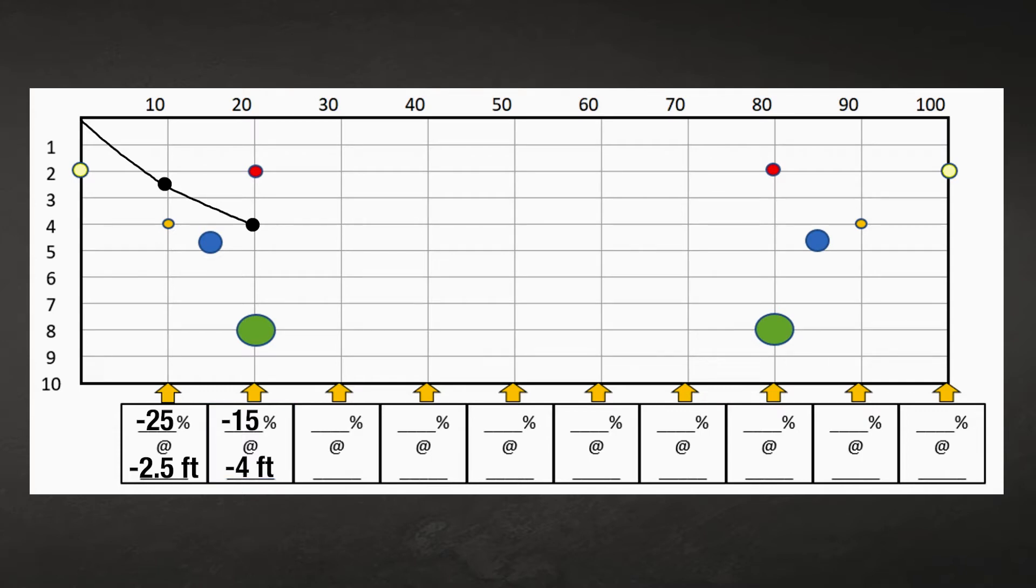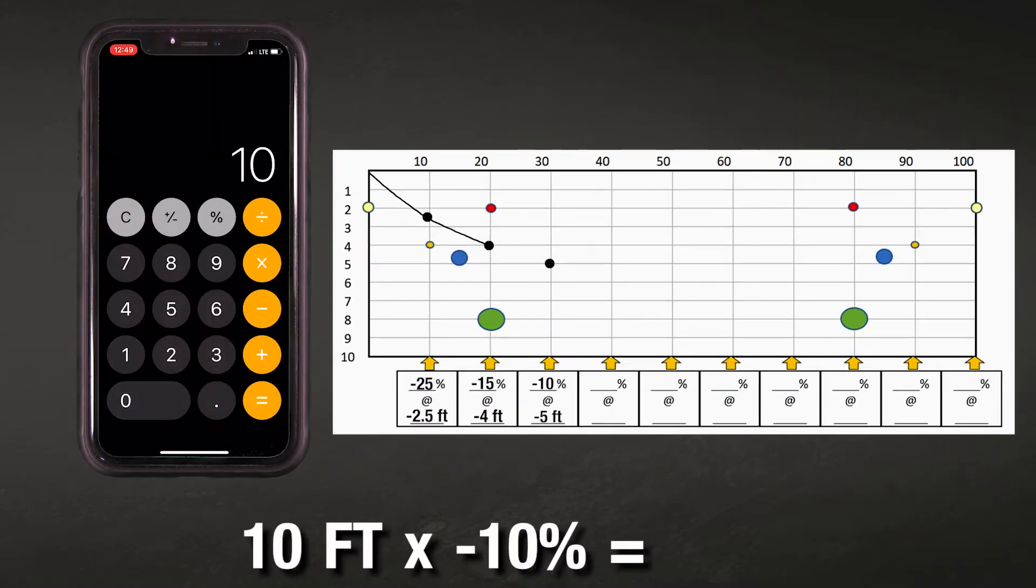Knowing that I want to be level at five feet deep leaves two more rods to achieve that depth. On rod three, I'm going to change the pitch to a negative 10%, which will result in a one foot depth change, bringing the depth to five feet. Now, on the fourth rod, I can go to a zero percent pitch and my depth will stay approximately at five feet deep.